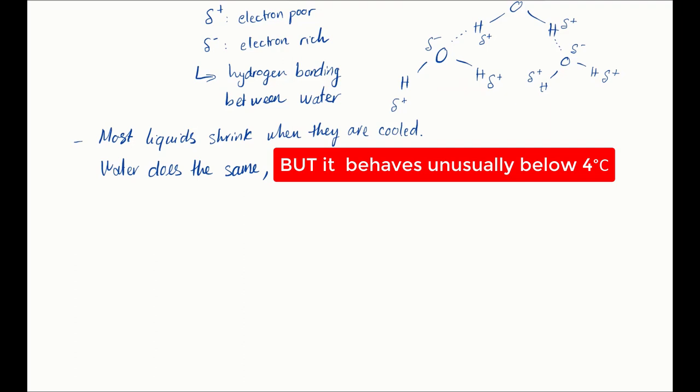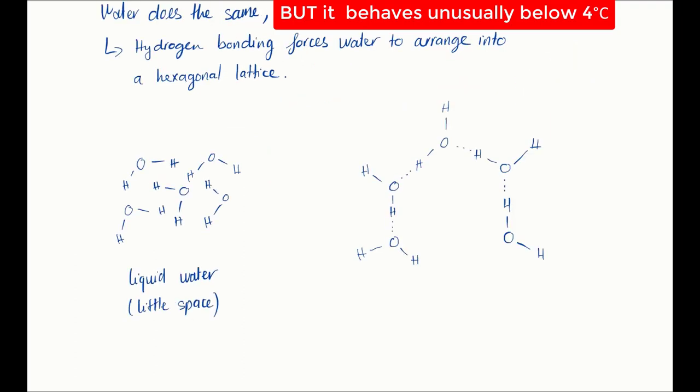In the case of water, the water molecules arrange itself into a hexagonal lattice. This lattice, see the spaces here, contains more space than the liquid state. So the freezing point of pure water is 0 degrees, but it starts to structure itself into a hexagonal form from 4 degrees. So when you cool liquid water down from say room temperature, it will shrink like most liquid would.